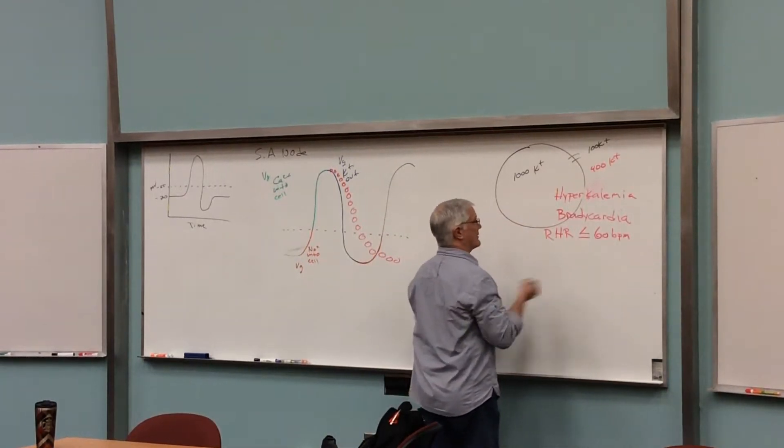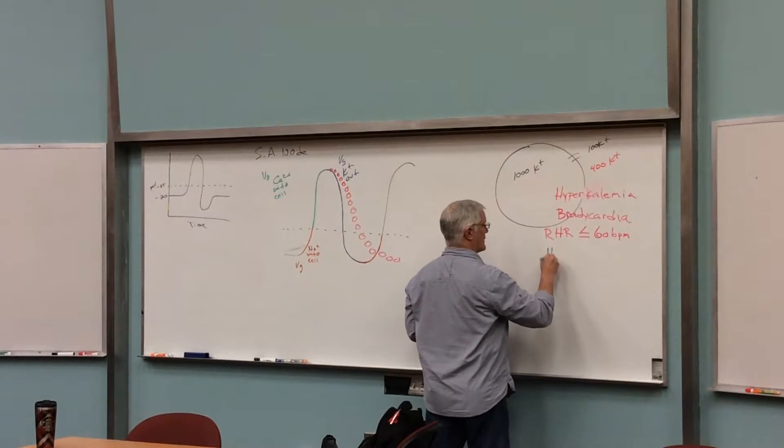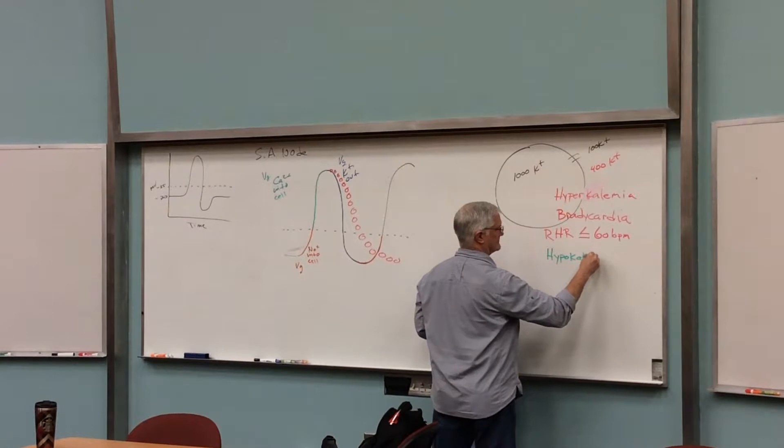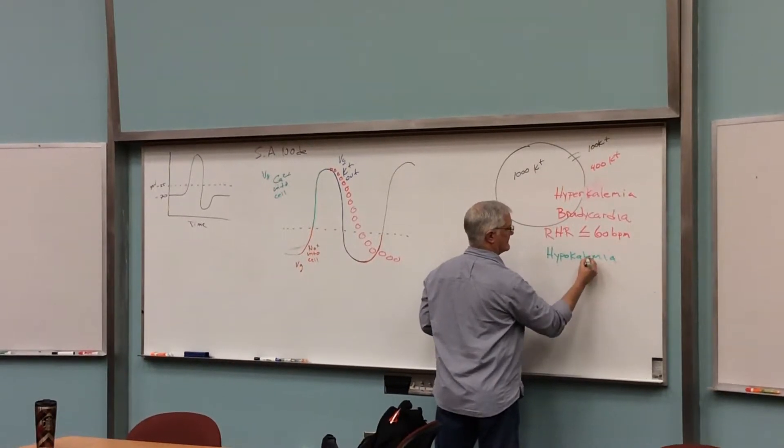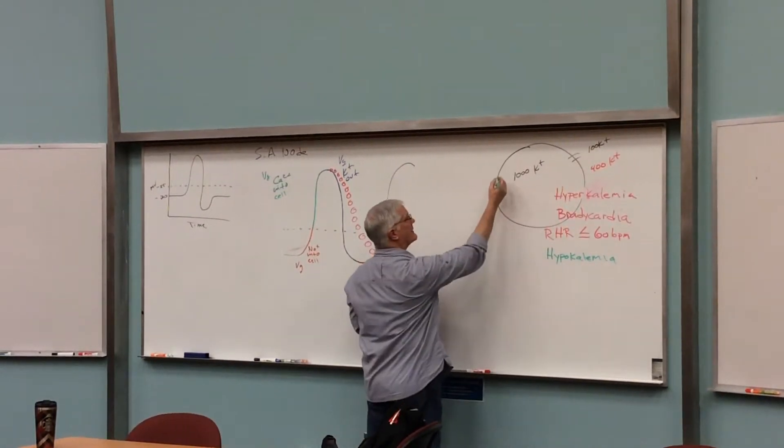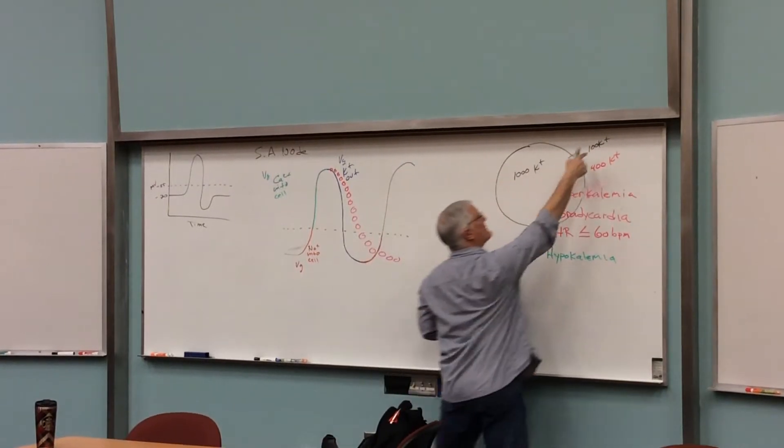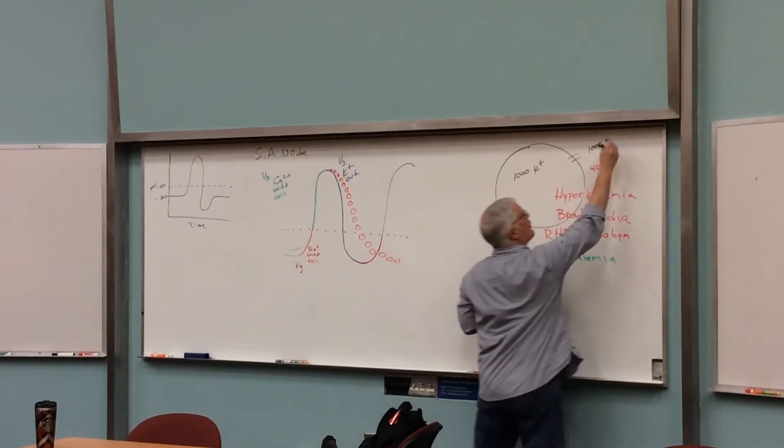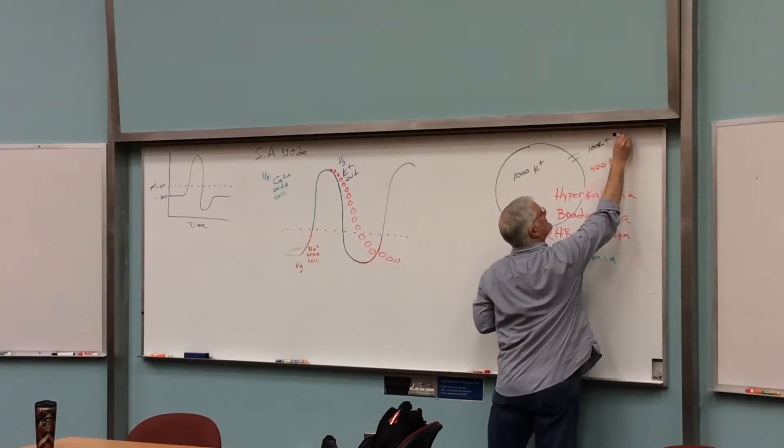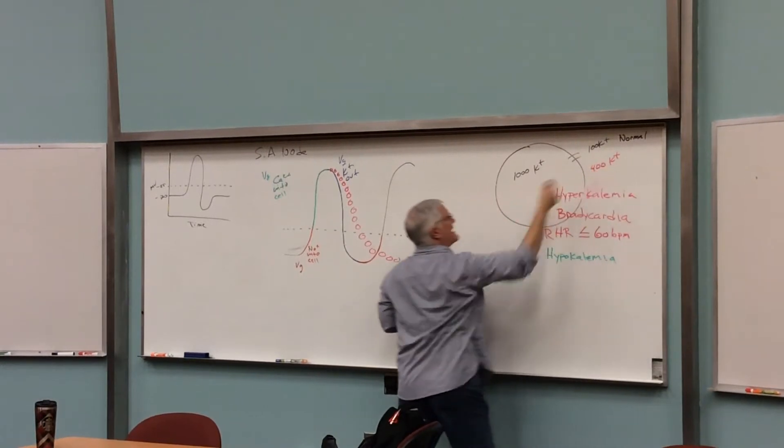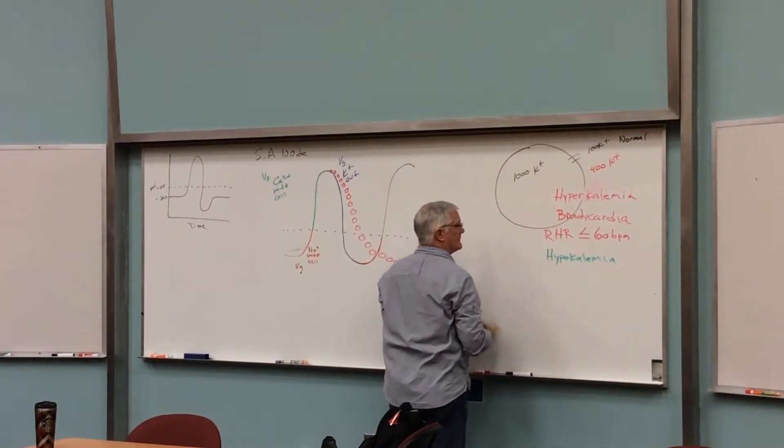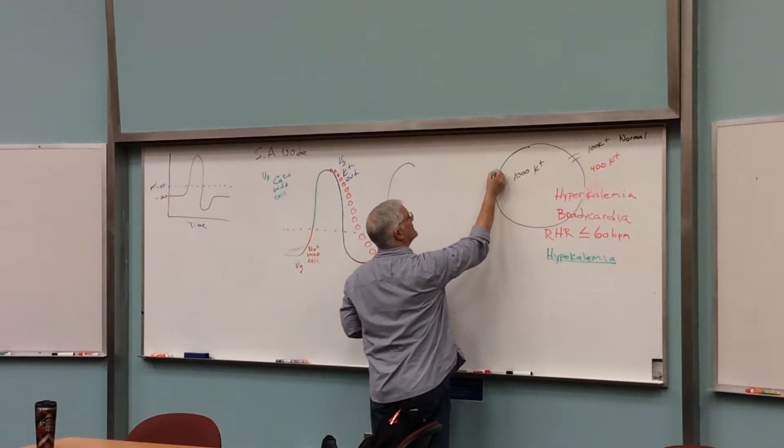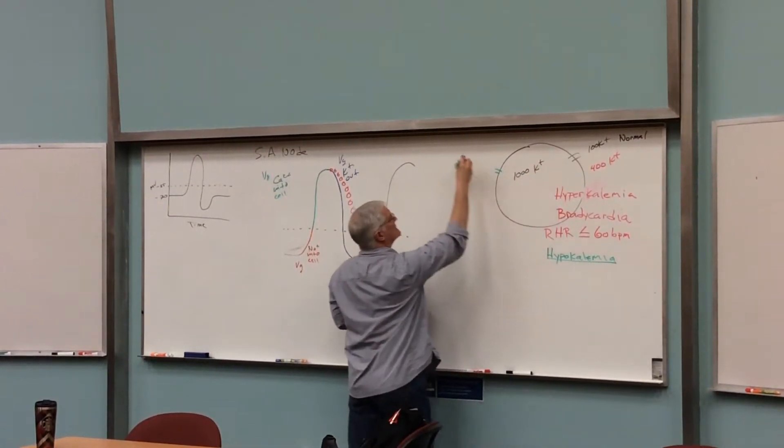Let's put that in here. Hypokalemia. Let's put it over here. Let's say instead of normally being 100, this would be like normal in black, and that's hyperkalemia in red. Then hypokalemia, we'll put it over here. If 100 is normal, let's make it 10.